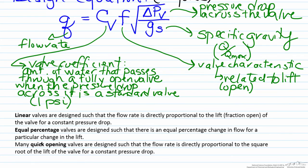For linear valves they're designed such that the flow rate is directly proportional to the lift, in other words how open it is, for a constant pressure drop. Therefore as you double the openness of the valve, you go from forty percent open to eighty percent open, you are doubling the flow rate going through. The valve characteristic F is proportional to L, the lift.